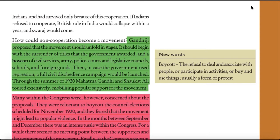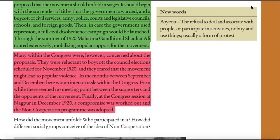Through the summer of 1920, Mahatma Gandhi and Shaukat Ali toured extensively, mobilizing popular support for the movement. Many within the Congress were concerned about the proposals and reluctant to boycott the council elections scheduled for November 1920, fearing the movement might lead to popular violence. There was an intense tussle within the Congress between September and December. Finally, at the Congress session at Nagpur in December 1920, a compromise was worked out and the non-cooperation program was adopted.